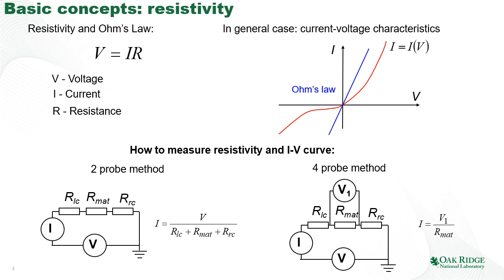To deal with this problem, people long ago suggested four-probe measurements, where we still apply voltage across the whole circuit and measure the current through it, but in addition we use two additional voltage probes to detect the potential drop across only the region of interest. By measuring only the potential drop across the region of interest rather than the total applied voltage, we figure out the current-voltage characteristic of only that particular region. There are specific requirements for the input impedances of the voltmeters used, so current flows through the material and not through the voltmeter.